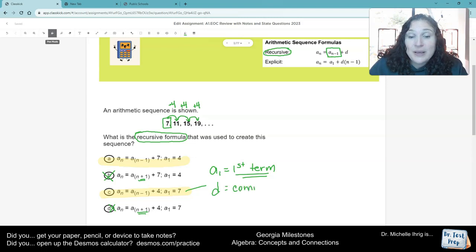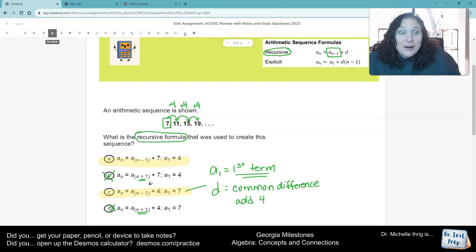That's what we add or subtract. So in this case, we're adding or subtracting 4. So that's why it's C because, first of all, it couldn't be B or D because it has plus 1 in it. And then the first number is 7. So it has to be A sub 1 is 7. That's it.